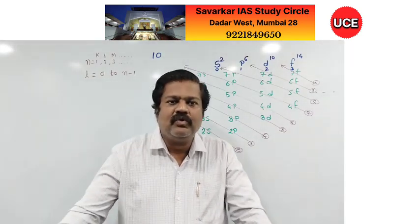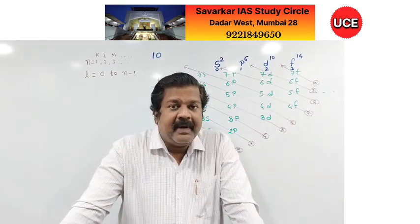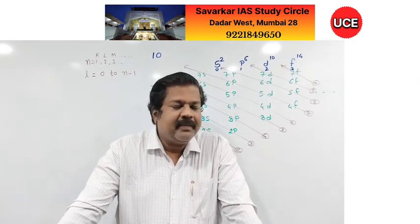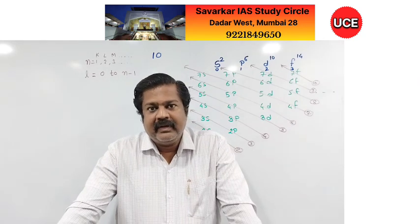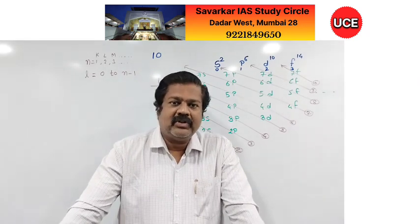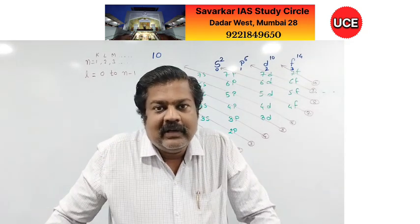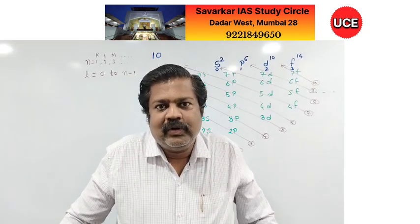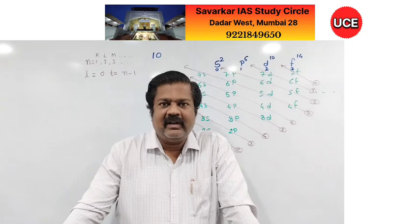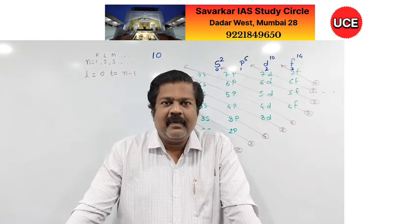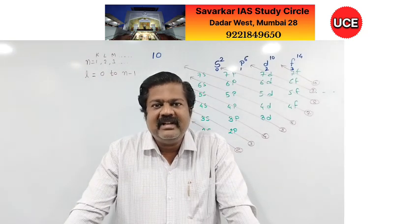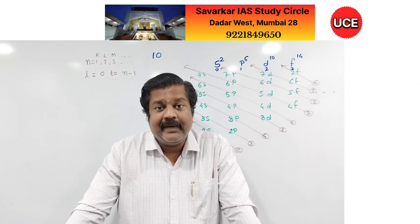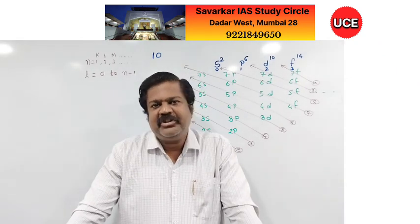Nobody has ever seen an atom. Even with a microscope we can observe cells and their nuclei, but no microscope yet developed can observe single atoms or locate electrons. We must reason on an imaginary basis. Even an electron microscope cannot locate an electron.